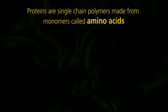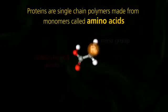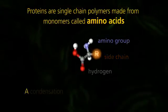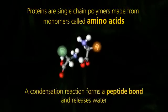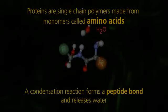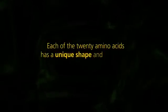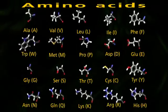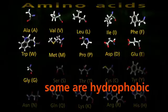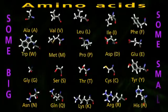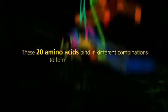Proteins are single chain polymers composed of monomers called amino acids. A condensation reaction forms a peptide bond and releases water. Each of the 20 amino acids has a unique shape and chemistry. Some are hydrophobic, some are hydrophilic. Some are big and some are small. These 20 amino acids bind in different combinations to form many different proteins.